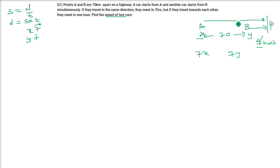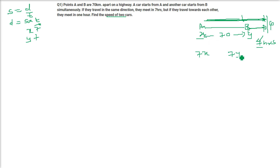Now let us see: the A-B distance is AQ minus BQ. We subtract BQ from AQ to get A-B. So AQ is 7X, BQ is 7Y, and if we subtract we get the distance 70. So 7X minus 7Y equals 70, which gives us our first equation X minus Y equals 10.